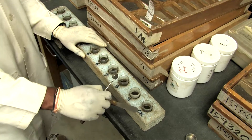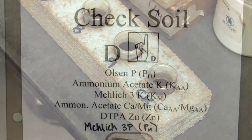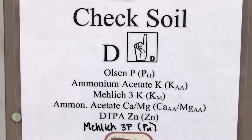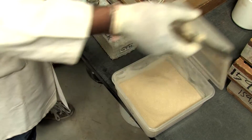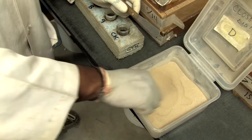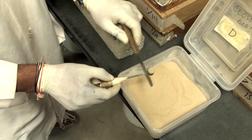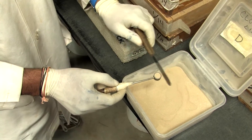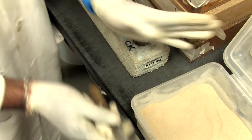Iowa State lab procedure includes a control sample, with known values of the components being analyzed, in every tray of ten unknown samples. The known control sample is added to the extraction container and will follow all the steps of the unknowns. If the soil test values of the control sample are not within quality control limits, the unknown samples will be re-analyzed.